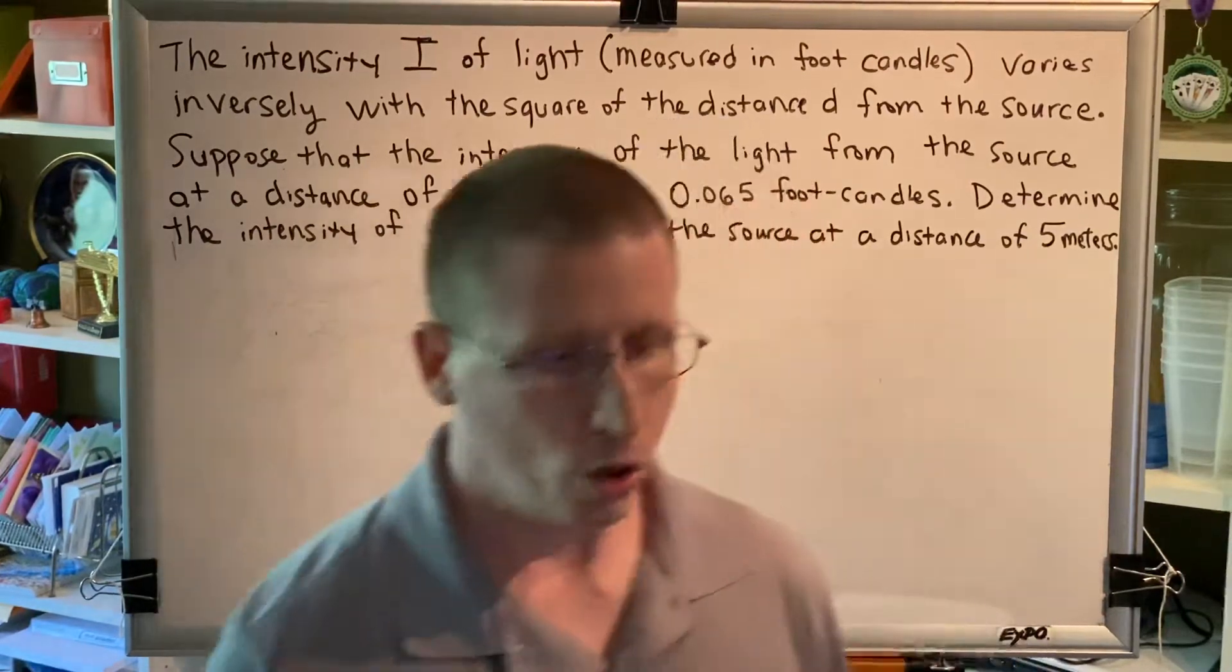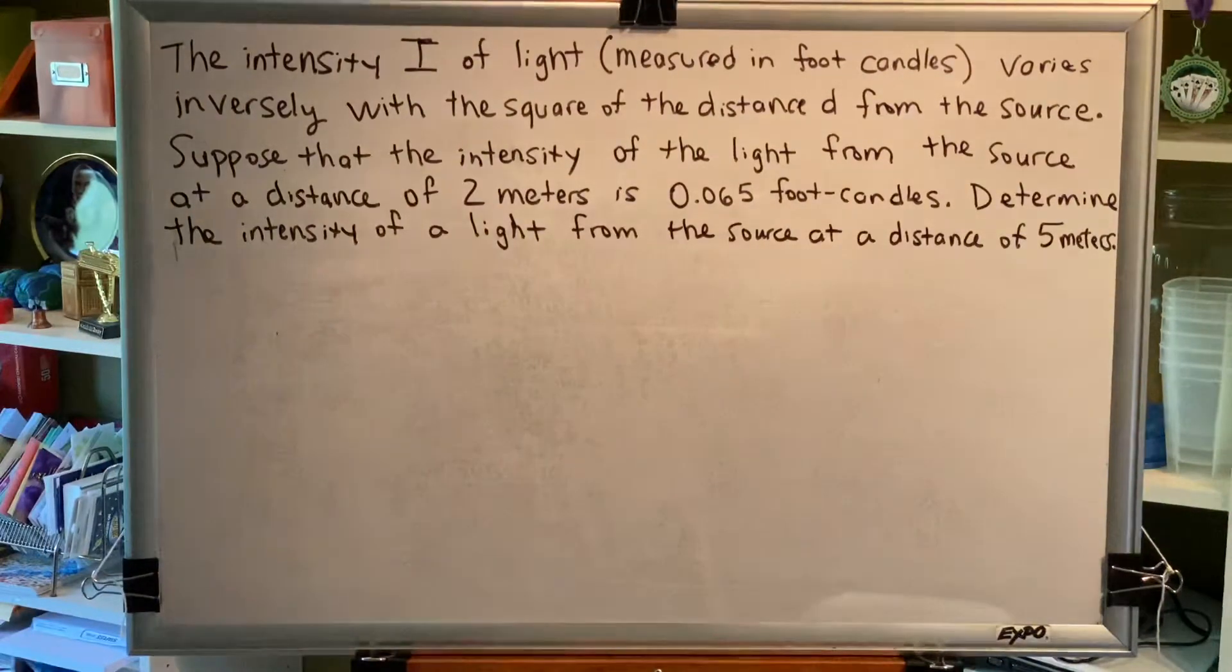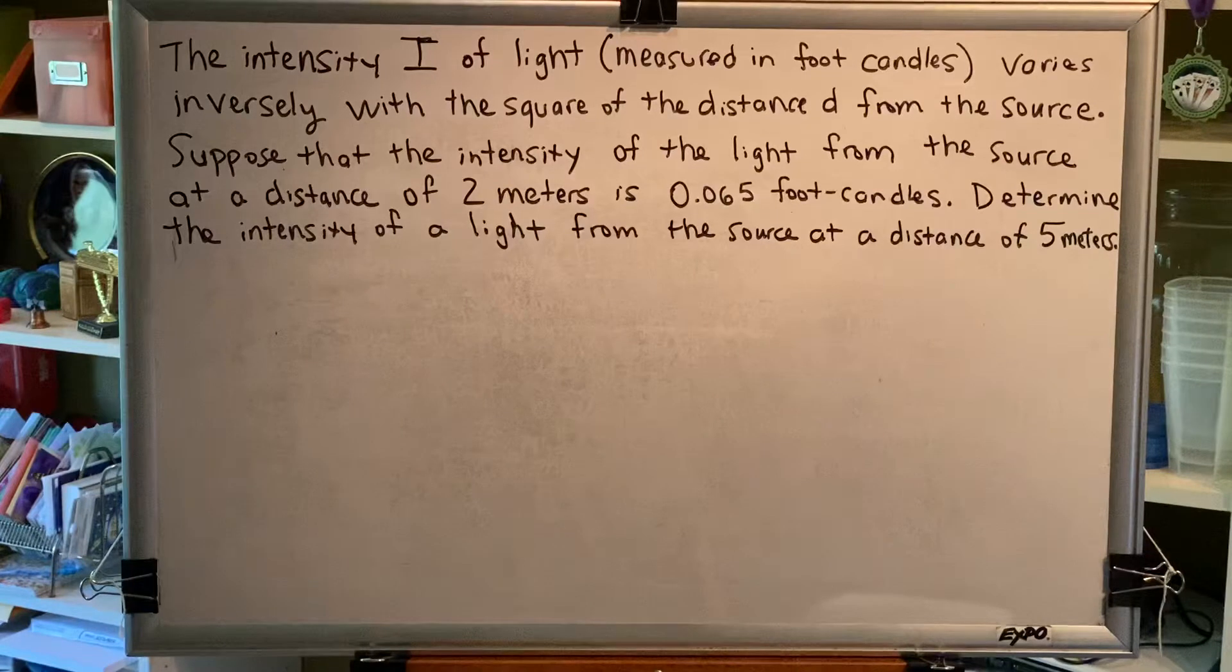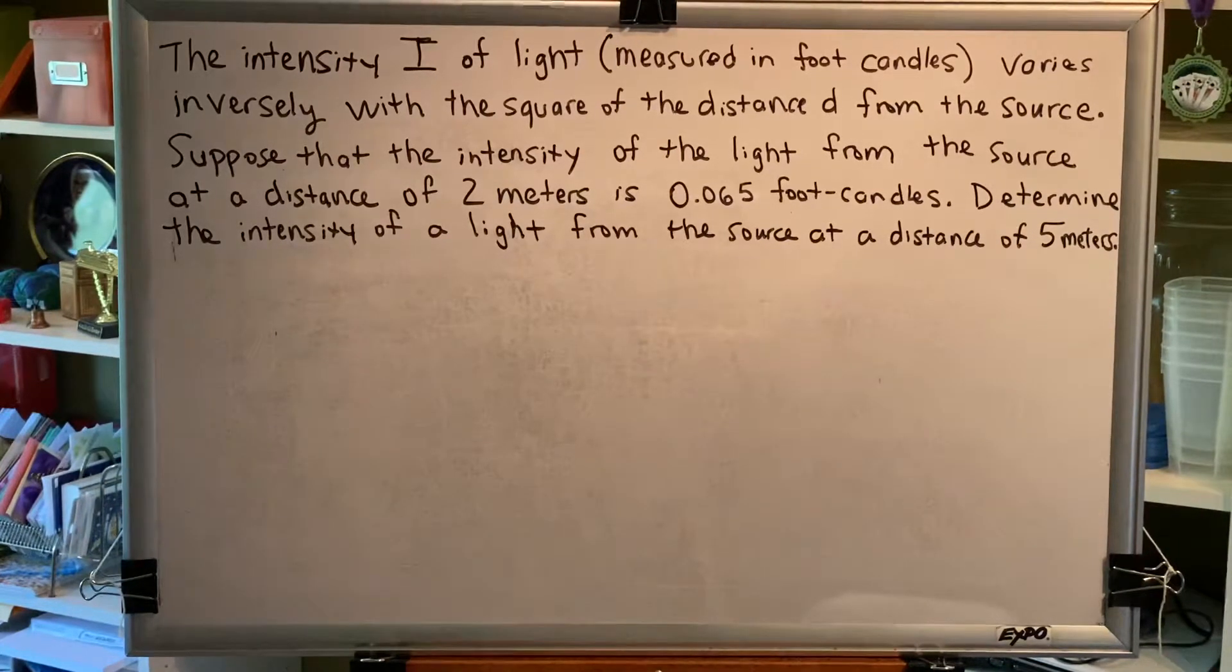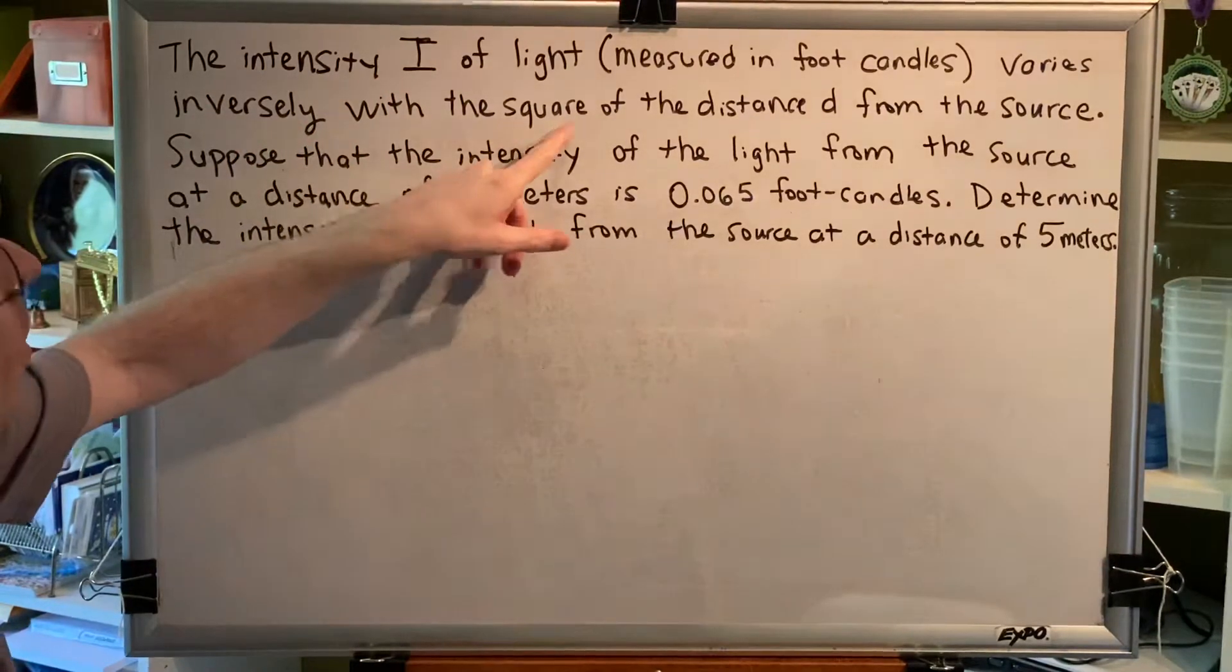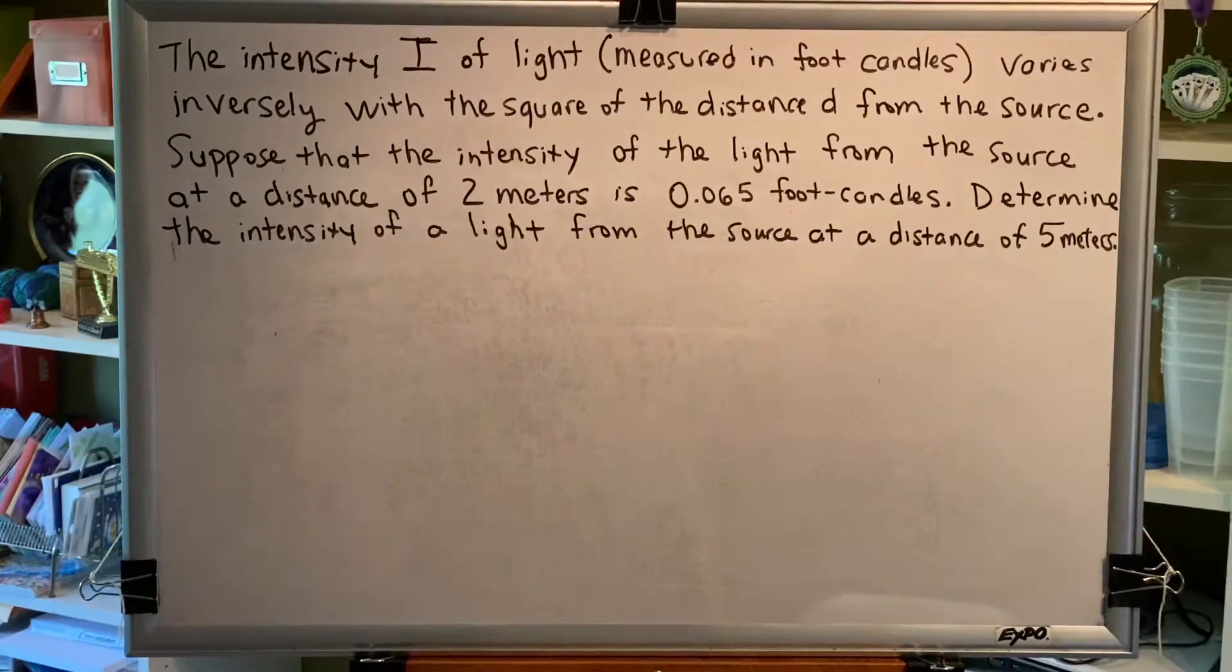A long time ago someone discovered this fact about light and the human eye and decided to come up with a precise mathematical relationship relating those two things. Here's what they discovered. Light intensity varies inversely with the square of the distance d from the source.